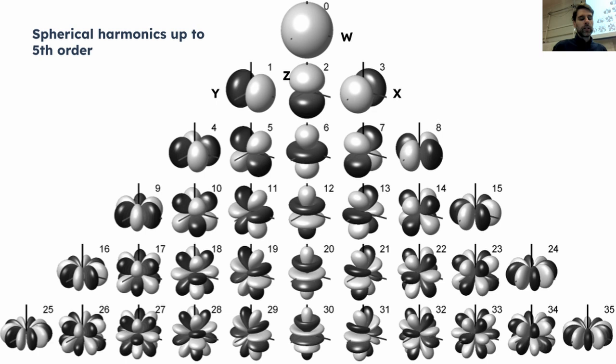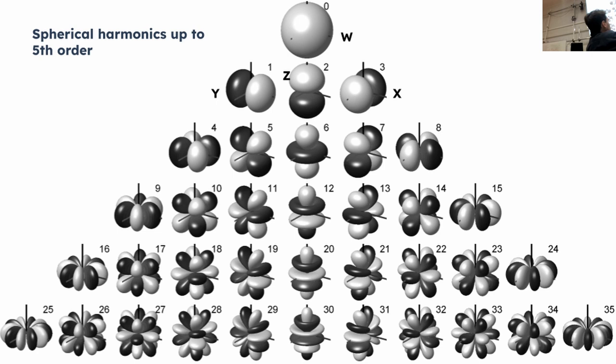In first order, we only differentiate between front and back, up or down, left or right. The resolution gets better with the order — you can see how it gets denser in higher spherical harmonics. If you have a composition in fifth order, you could also play it back in first order — just take the first four channels. Or second order: nine channels. Third order: 16 channels. Fifth order has 36 channels total. This downward compatibility is so nice — it's extremely versatile and super flexible.